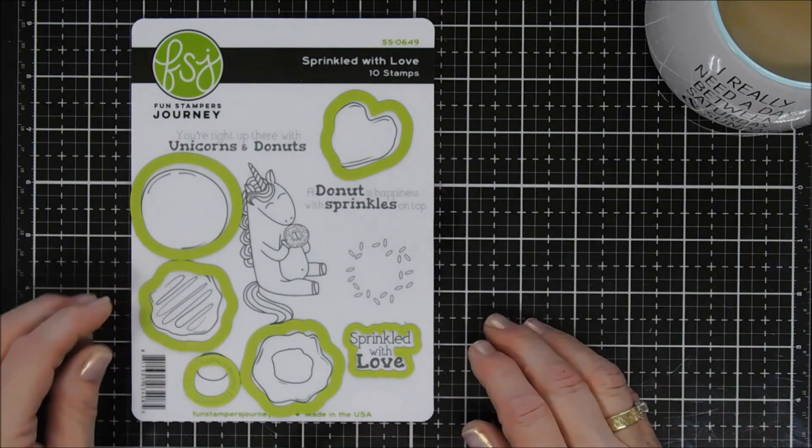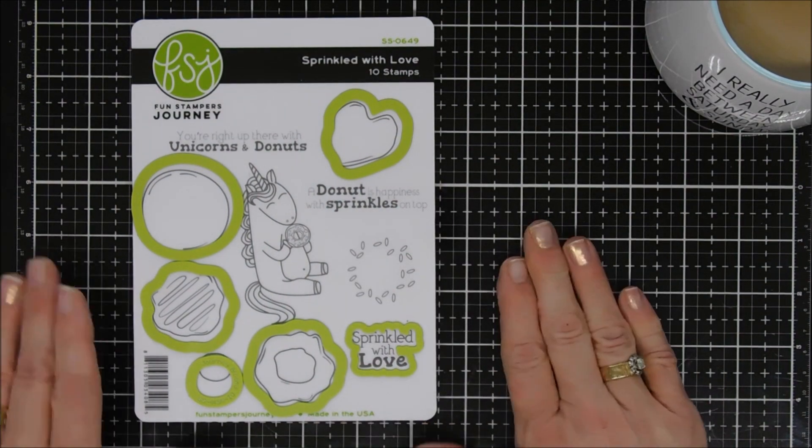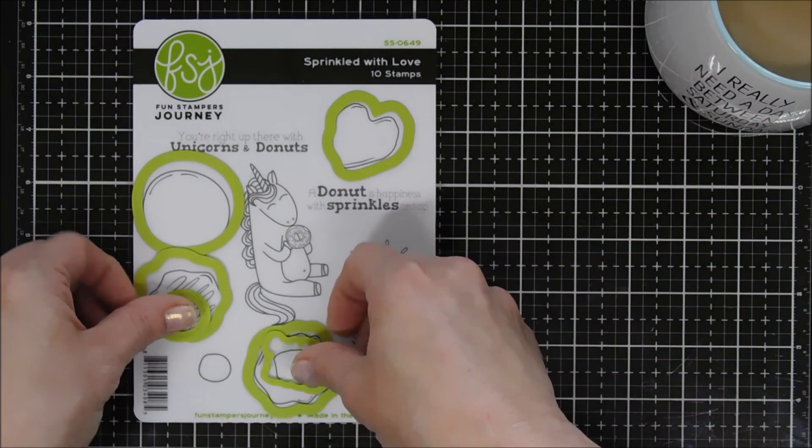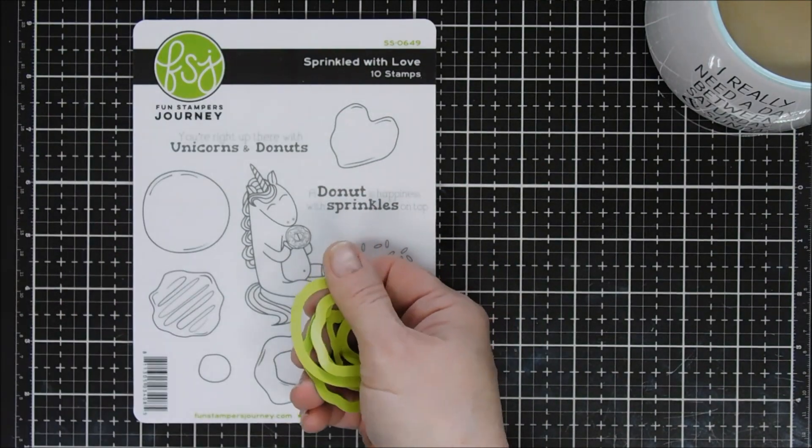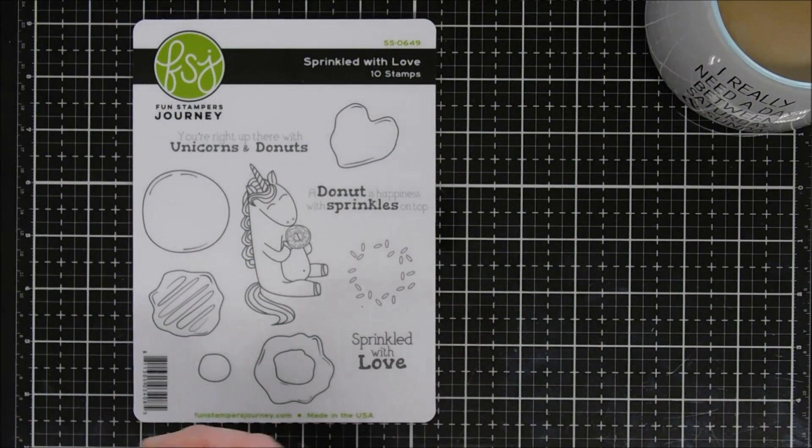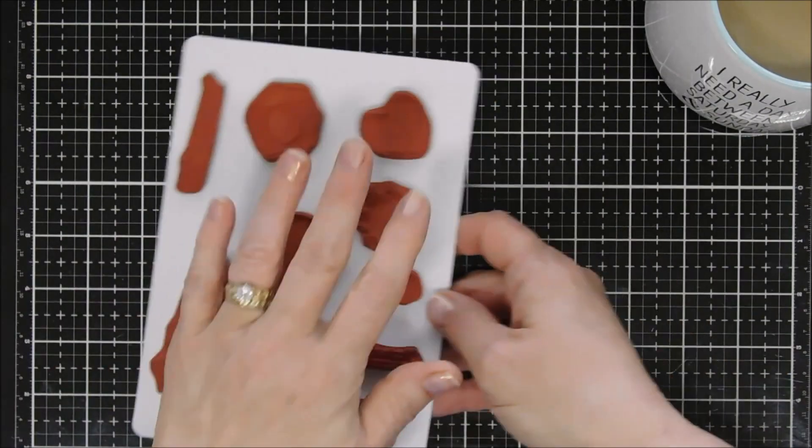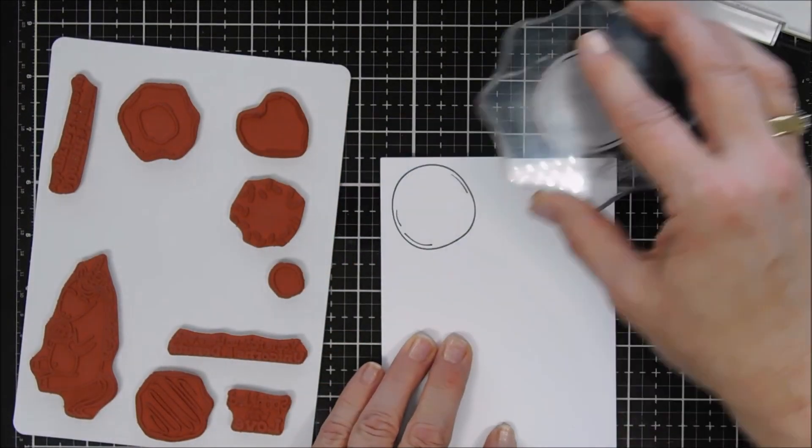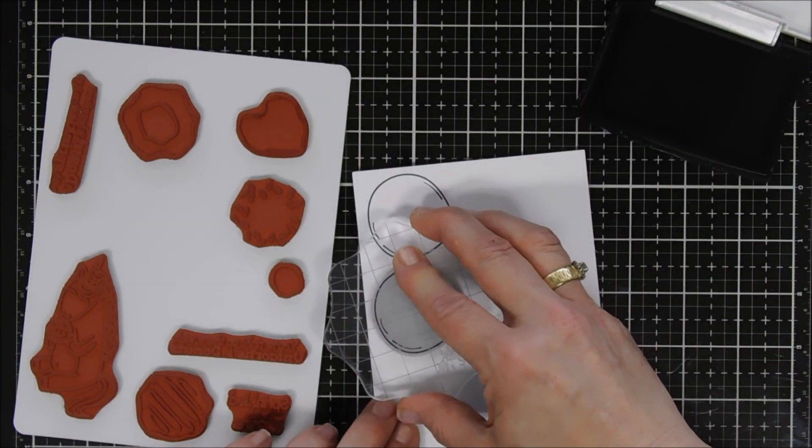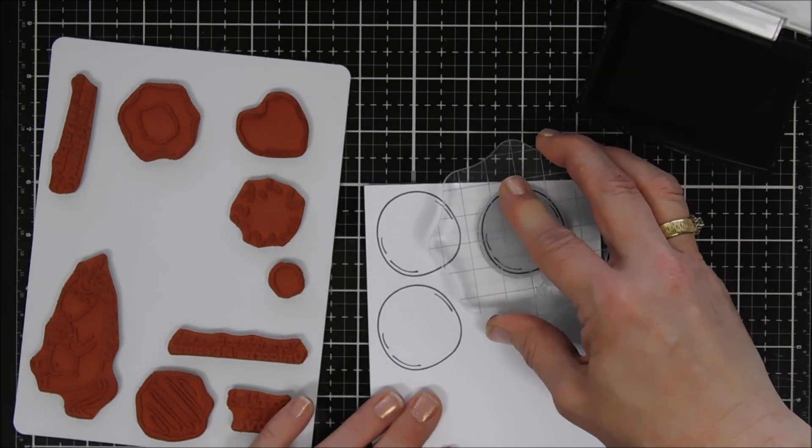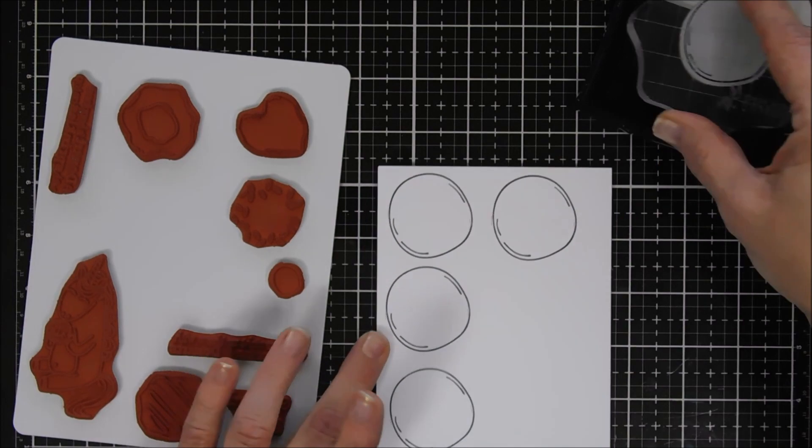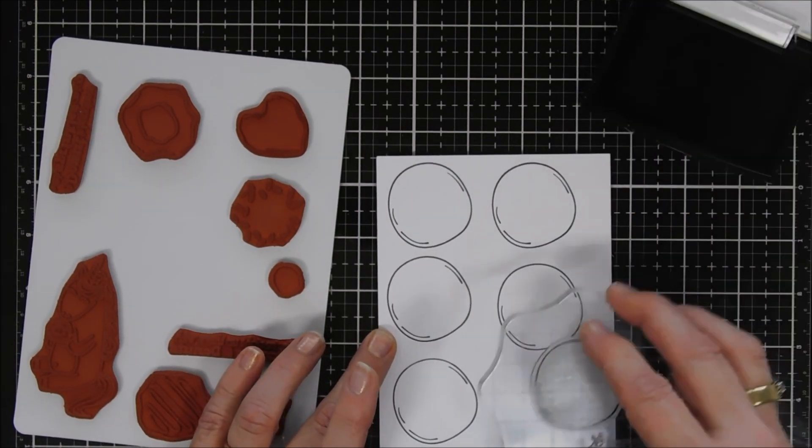We're going to make a sprinkle-filled donut card and I'm super excited to share it with you. We're going to start off by doing some stamping. I'm bringing out my VersaFine Onyx Black ink. I chose this ink because we're going to do some watercoloring and I know it will keep its vibrancy with the watercolor.